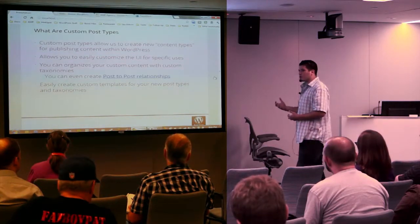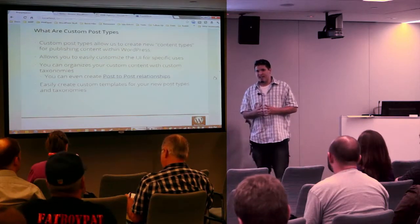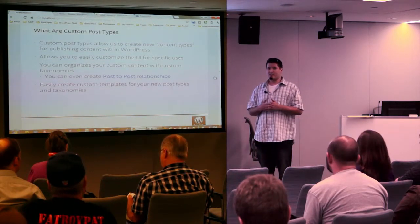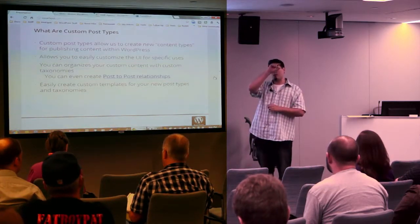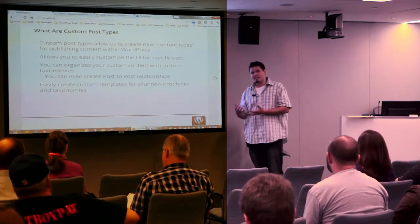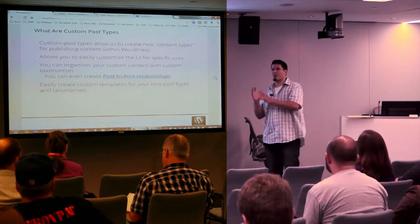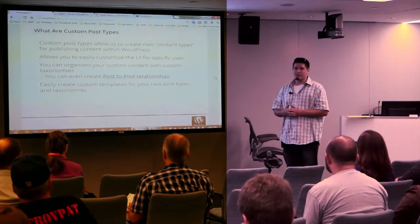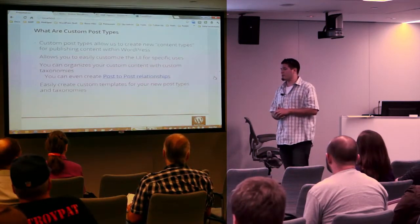You can even create post-to-post relationships. On the AMP website, we have services that map directly to posts or directly to portfolio items, so if you're on a portfolio item you can see all the services it falls under. That could have been done with mirrored taxonomies, but being able to map directly to another post type made it easier. There's a plugin that does that well since WordPress doesn't do it out of the box.